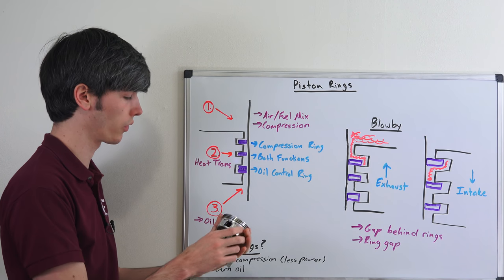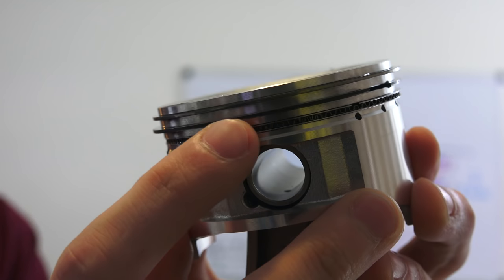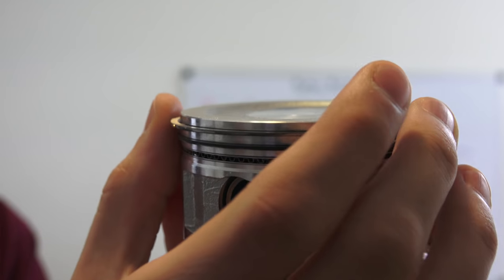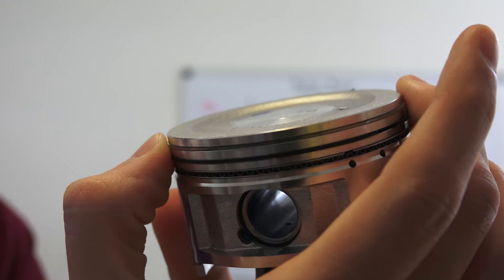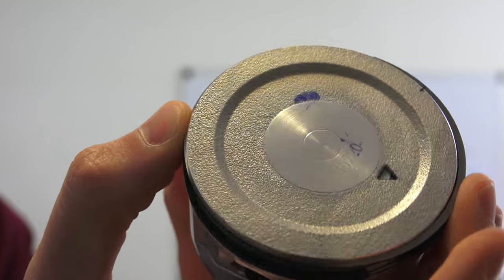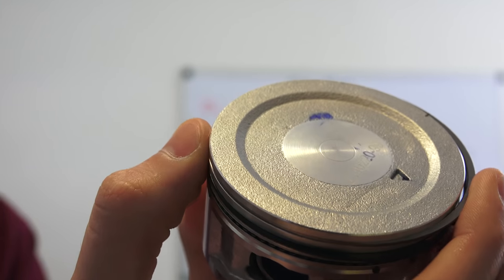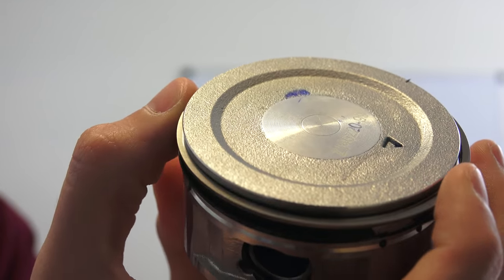Looking at the piston you can see that there are three rings. This top ring is the compression ring and that's helping to seal that combustion chamber so you get good compression and so that you don't get any of that air and fuel mixture down into your crankcase, which is known as blow-by.